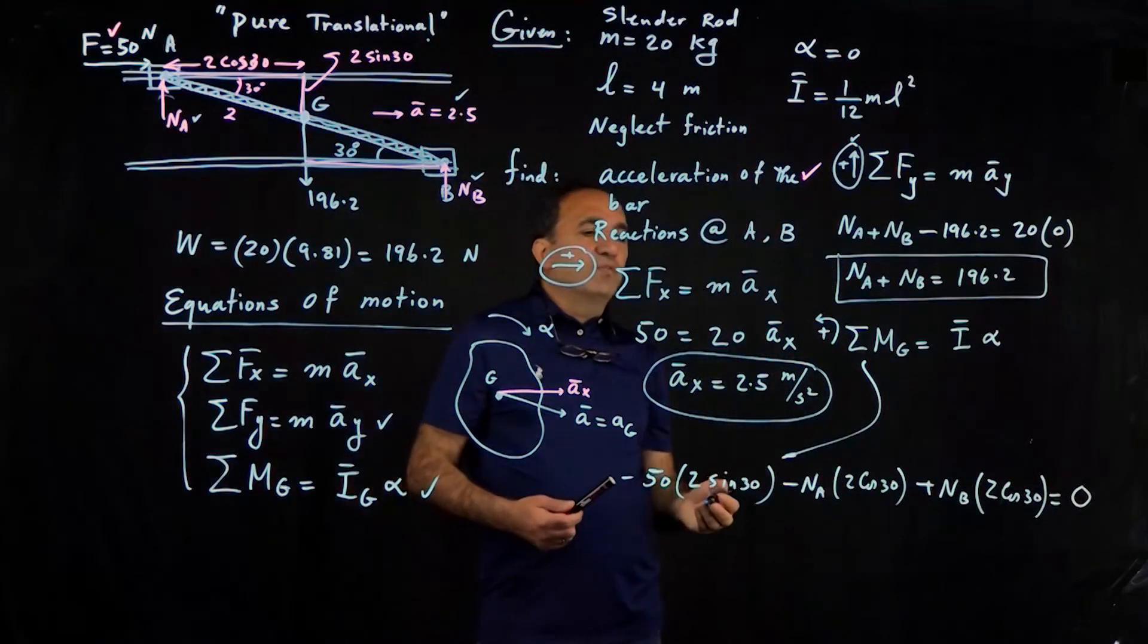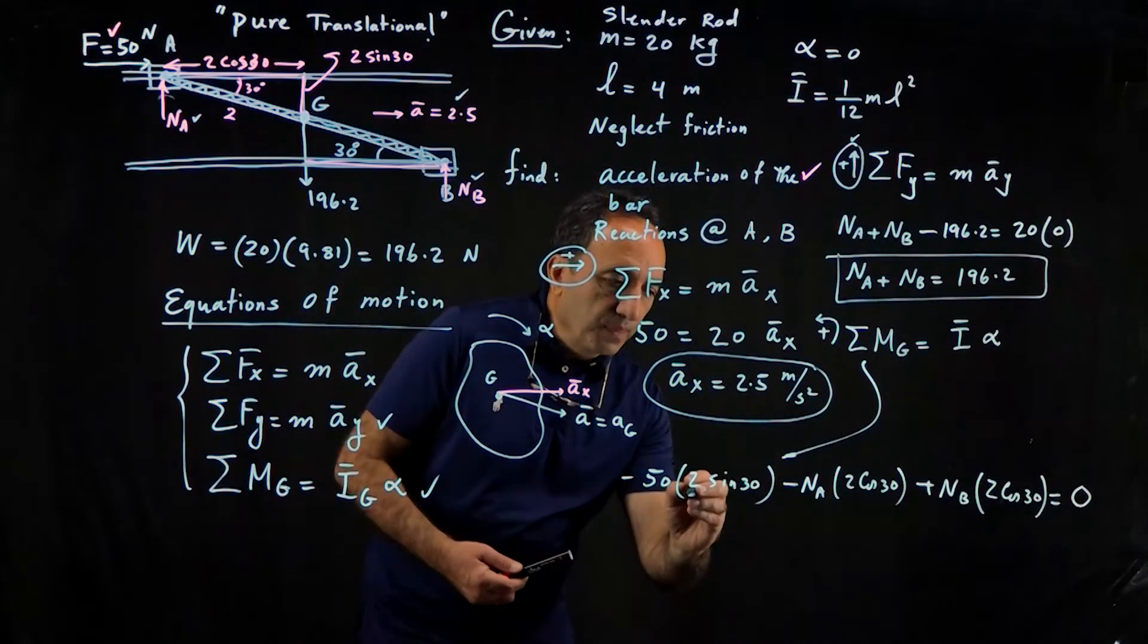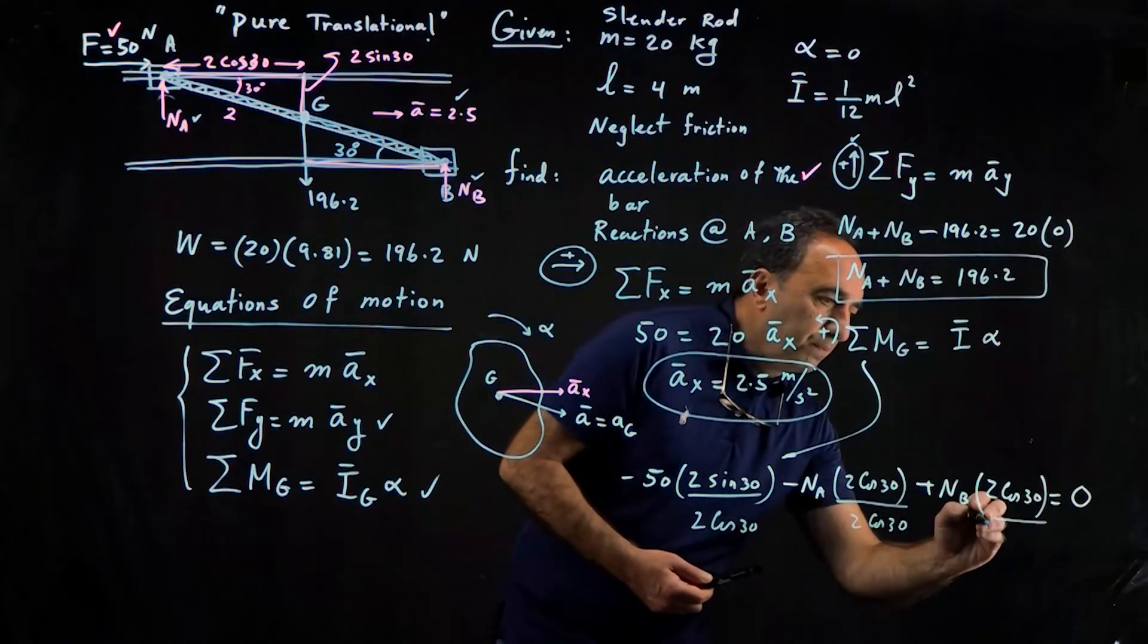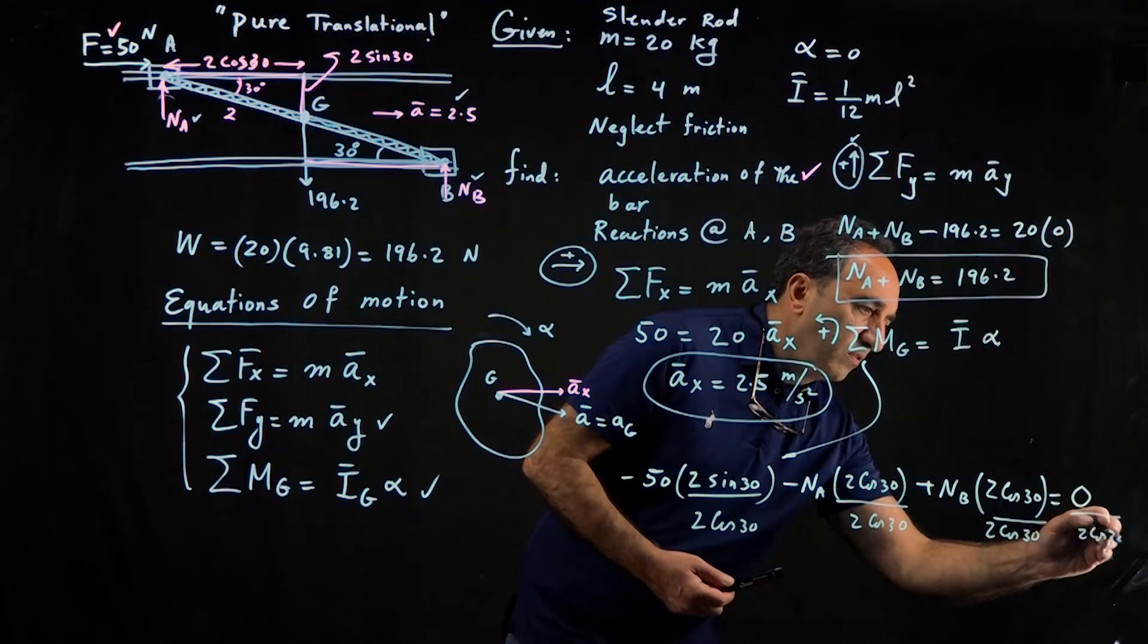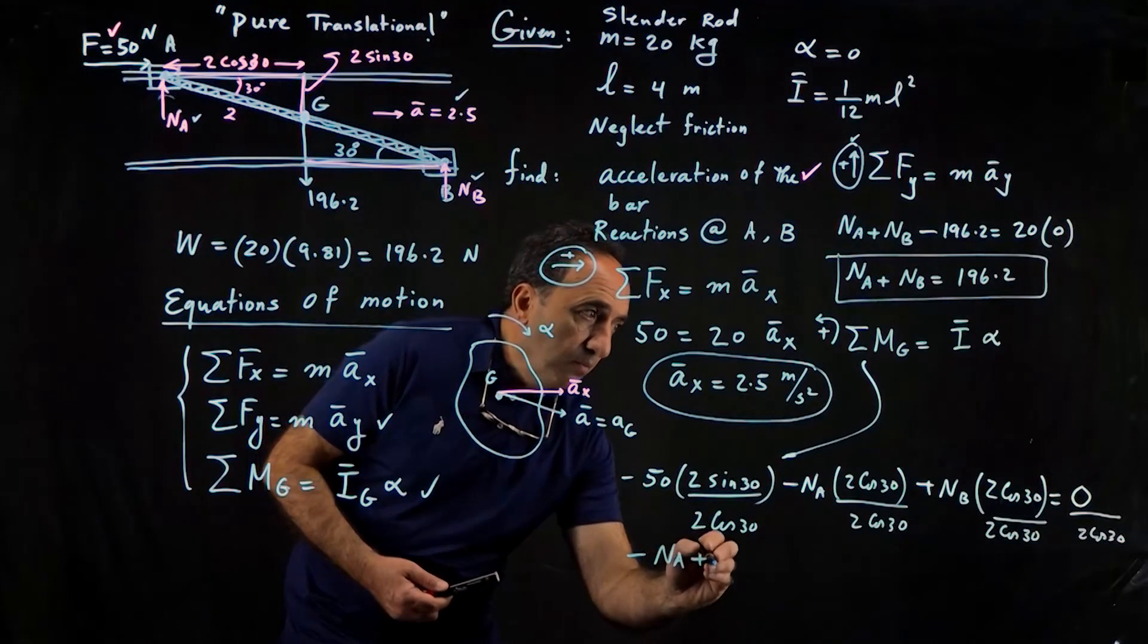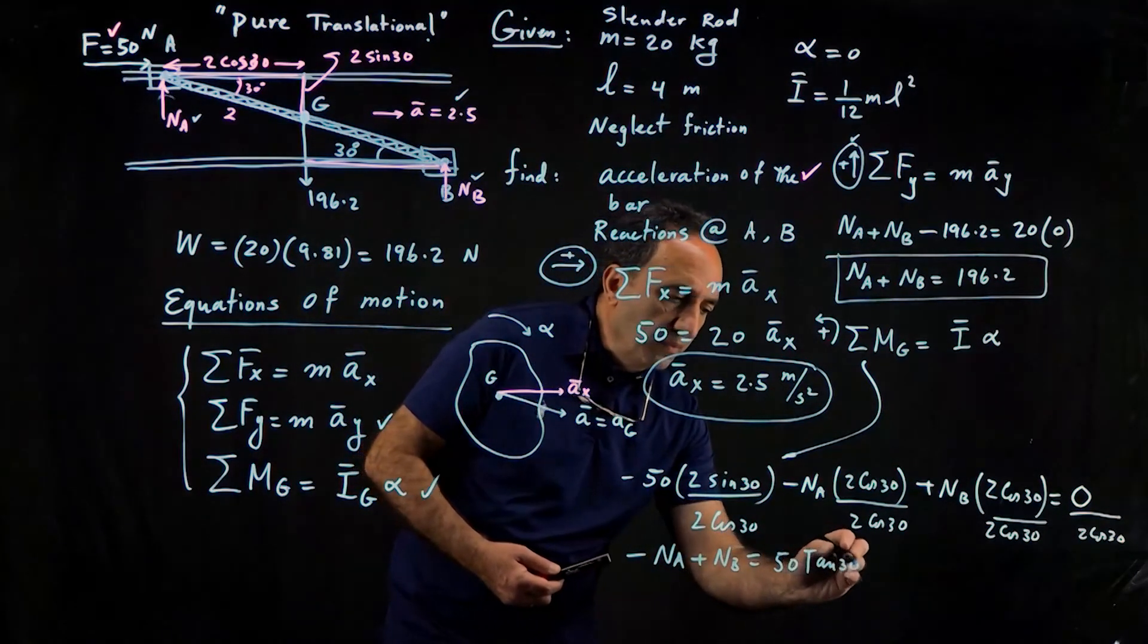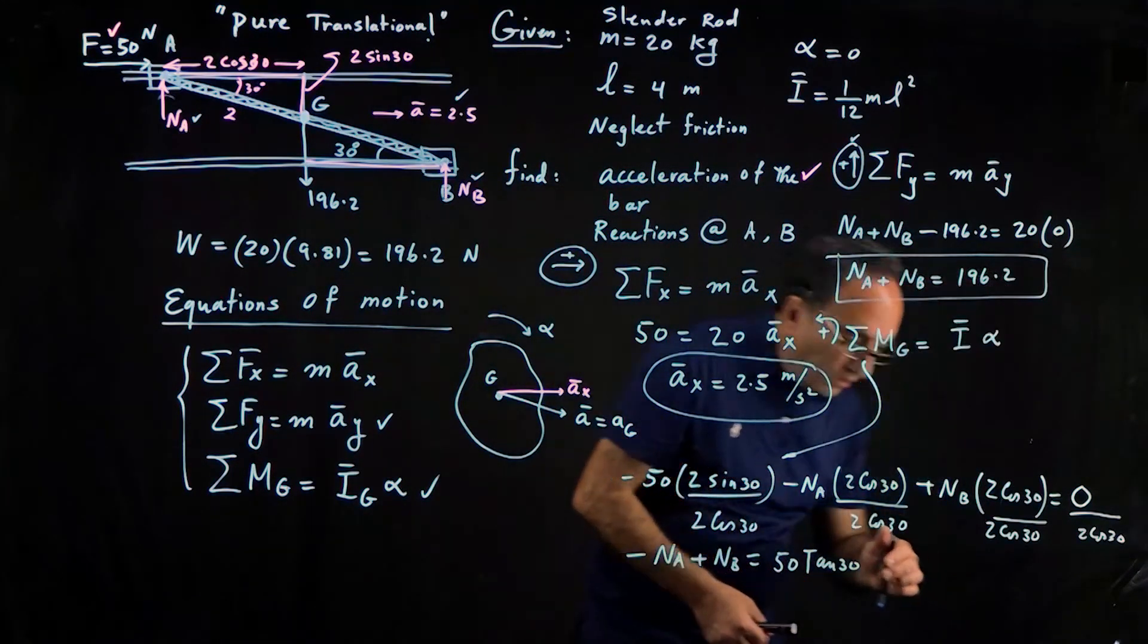I think probably the easiest way to solve this problem is to divide by the 2 cosine 30. That way we can get rid of these terms. And of course, if you divide by 2 cosine 30 on this side, you're still going to get 0. So we end up getting minus na plus nb, and that's the advantage. So this becomes actually a positive 50 if you take it to the other side, tangent 30. And I have written down here, 50 tangent 30 should be 28.87.